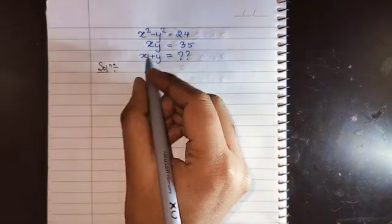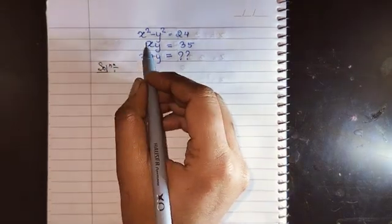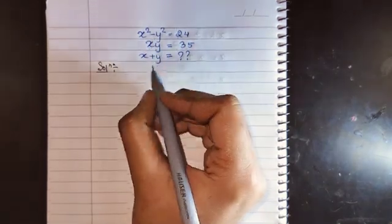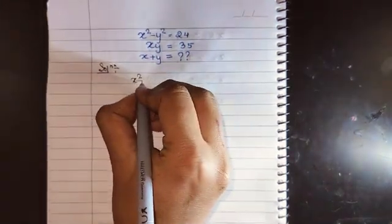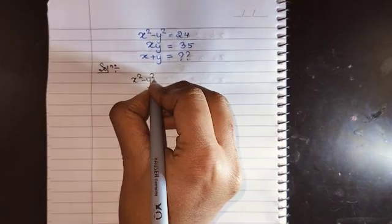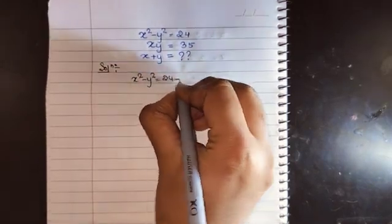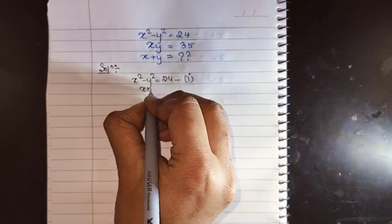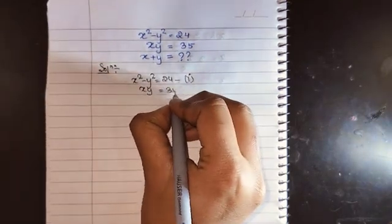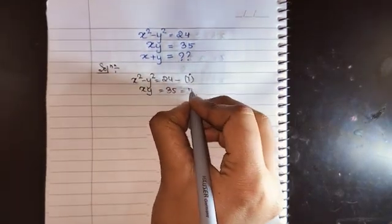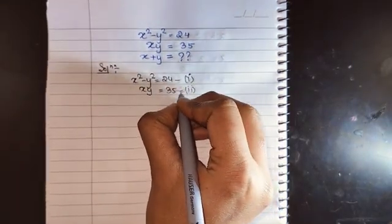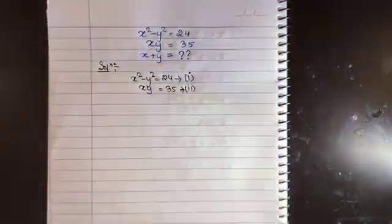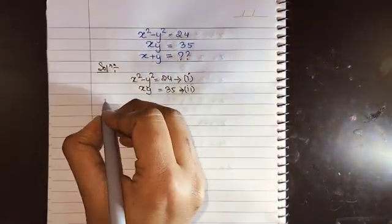Let's come back to the problem. We will assign x squared minus y squared equals 24 as our first equation, and xy equals 35 as our second equation.